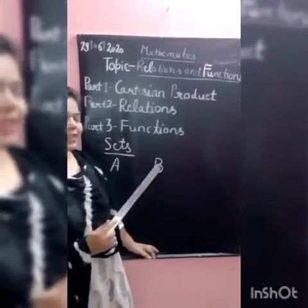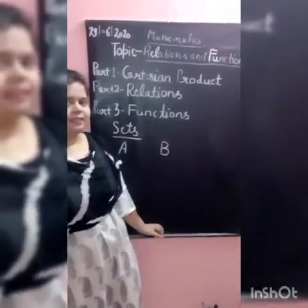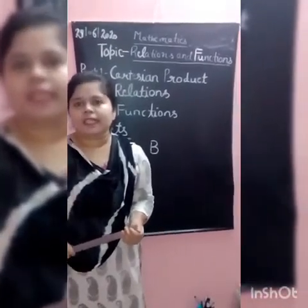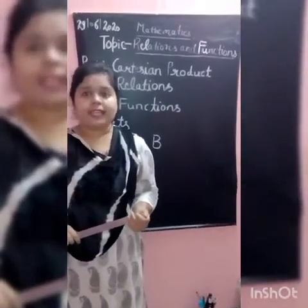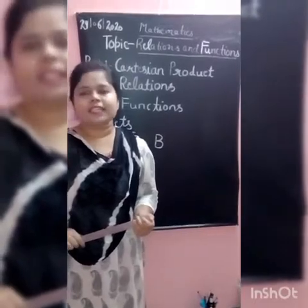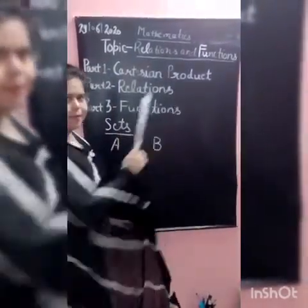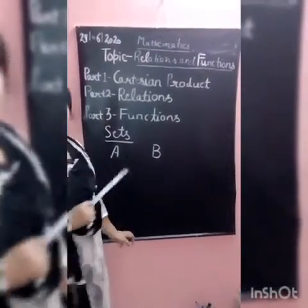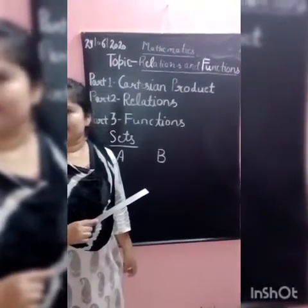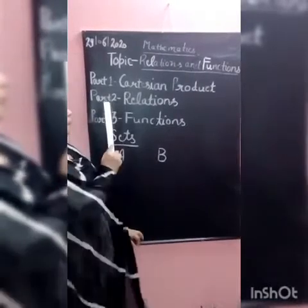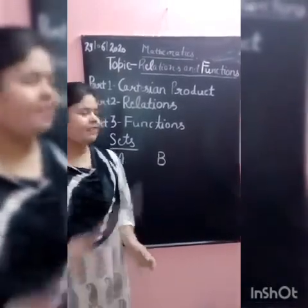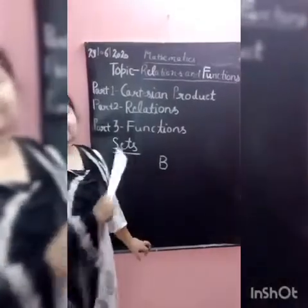Suppose we are having two sets A and B. How we are connecting the elements of each set? How we are developing the connections between elements of sets? For the connection, we will study about Cartesian product — this is the first part of the story. In the second part, we will establish the relations between two sets. Finally, in the third part, we will see the special type of relations that are known as functions.